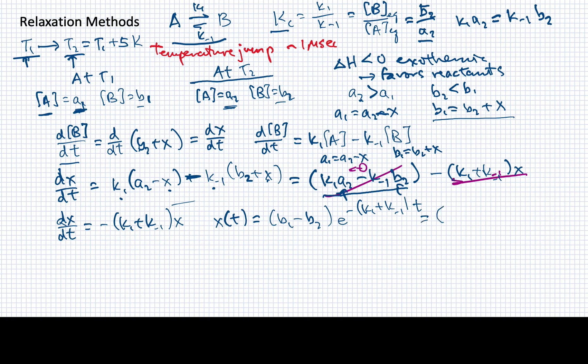Or I could also write this as B1 minus B2 E to the minus time over tau, where tau is now my relaxation time. So I'll write that explicitly over here, that tau is equal to 1 over the sum of these two rate constants.